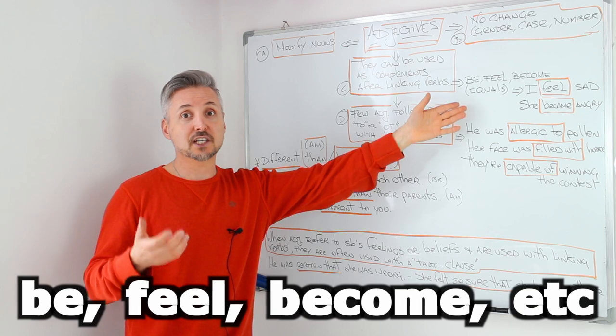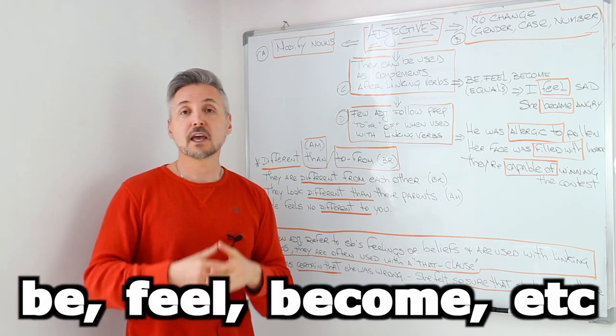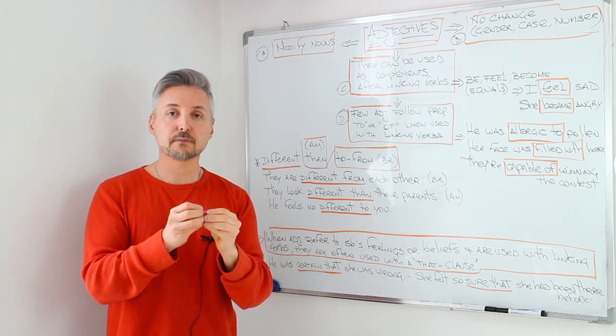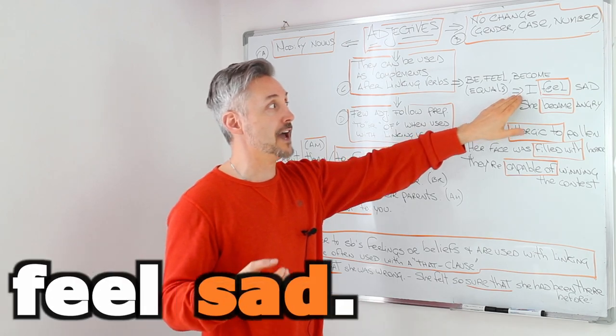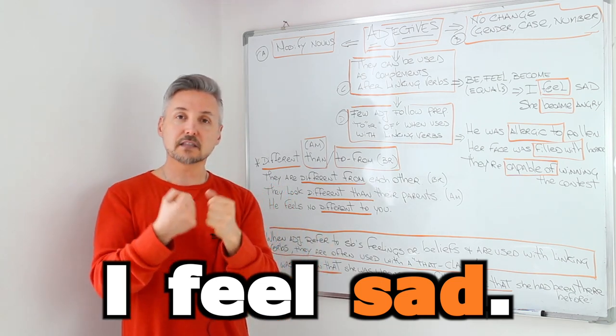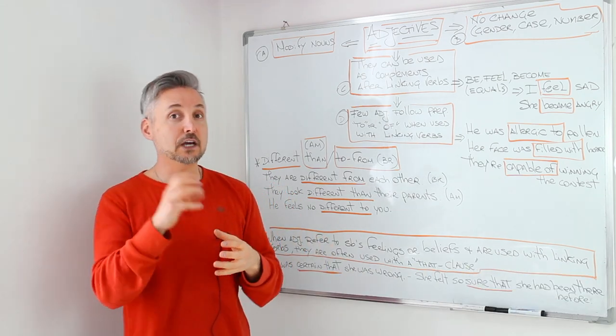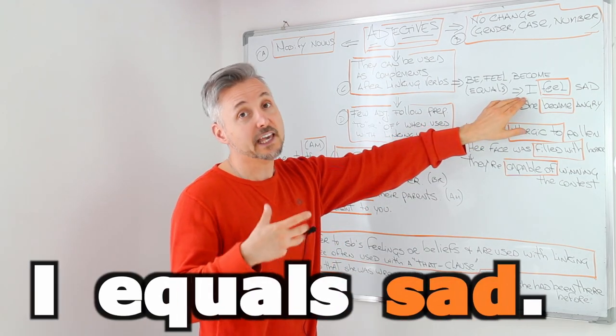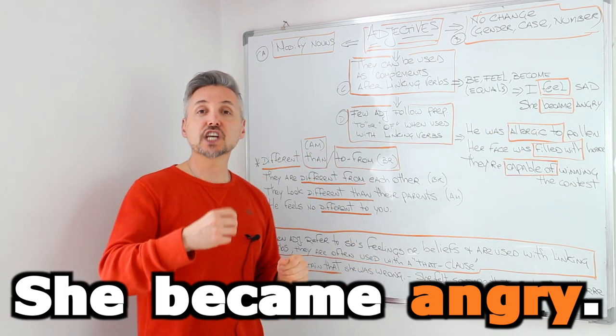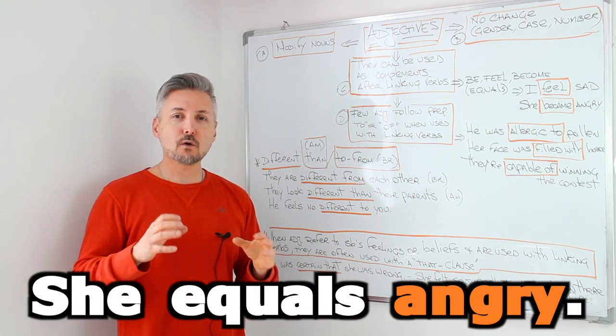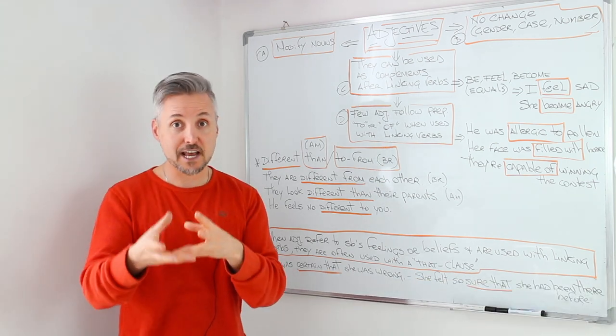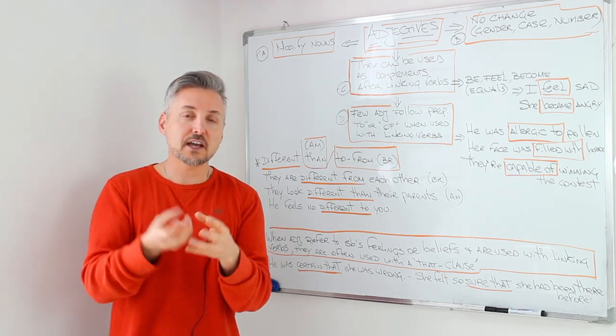But they are verbs such as be, feel, become, etc. If you put this verb after a pronoun like for example I feel sad and then we have the adjective sad, you can replace this verb, this linking verb with the word equals. So for example, I equals sad or she became angry. She equals angry. So this can give you an idea of what a linking verb is with an adjective. So the adjective there is a compliment.